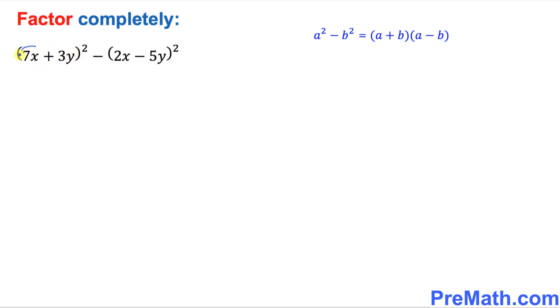I want to call this part as an a, and I want to call this part in this parentheses as b. Now you can see that this is going to be the difference of two squares, a² minus b². So then it's going to be the sum, so a plus b is going to be simply (7x + 3y) + (2x - 5y) times (7x + 3y) - (2x - 5y).